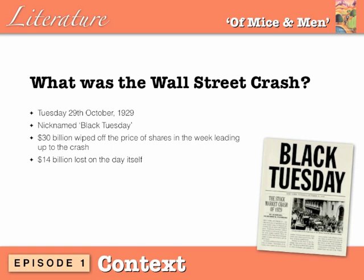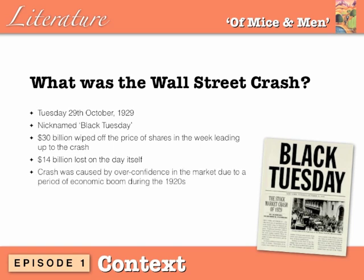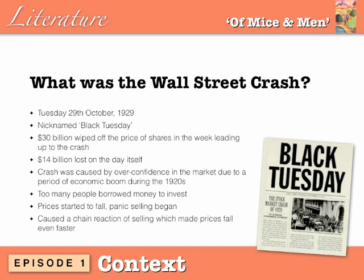It's difficult to imagine the size of an equivalent sum of money today. The crash was caused by overconfidence in the market due to a period of economic boom during the 1920s. Too many people borrowed money to invest in the stock market, and when a period of prosperity is based on loans, a crisis is often inevitable. When prices started to fall, panic selling began — investors decided to get their money back fearing they would lose it — causing a chain reaction of selling which made prices fall even faster. Imagine a row of dominoes knocking each other over.